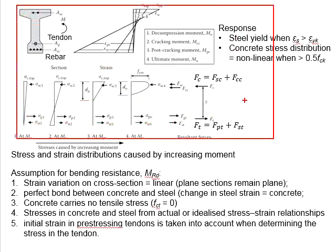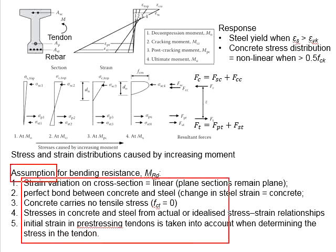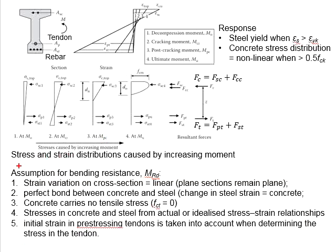This concept sets the basis of the moment resistance of a pre-stressed concrete beam. The determination of the bending resistance, MRd, is based on a set of assumptions as listed here. These assumptions are not fully correct; however, for the simplicity of analysis, they are assumed to be so. On the basis of such assumptions, the response of the member subjected to moment can still be reliably predicted.